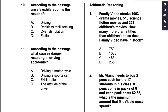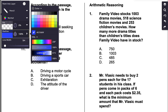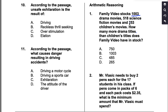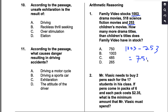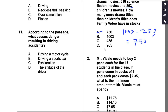Number one: Family Video stocks 1,003 drama movies, 518 science fiction movies, and 253 children's movies. How many more drama titles than children's titles does Family Video have in stock? Drama equals 1,003 and children's titles equal 253, so we take the difference: 1,003 minus 253 equals 750. So A should be our answer for this one.